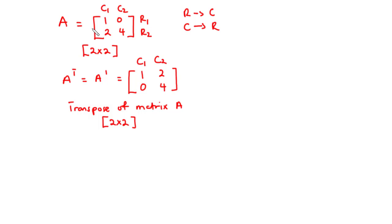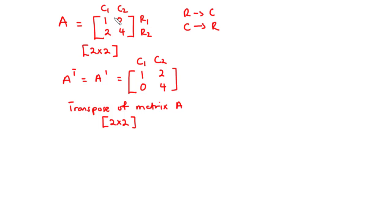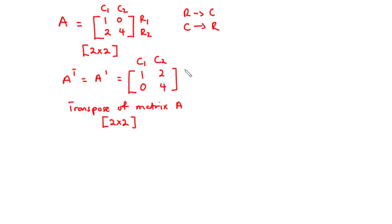You realize here that elements in row 1 become elements in column 1. Similarly, elements in column 1 become elements in row 1, and elements in column 2 also become elements in row 2. So, to obtain the transpose of any given matrix, we basically interchange the rows and columns.